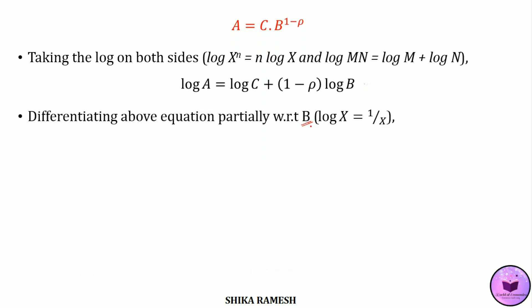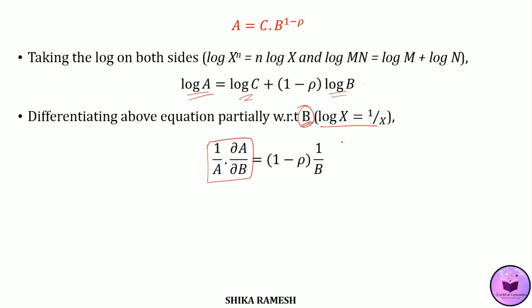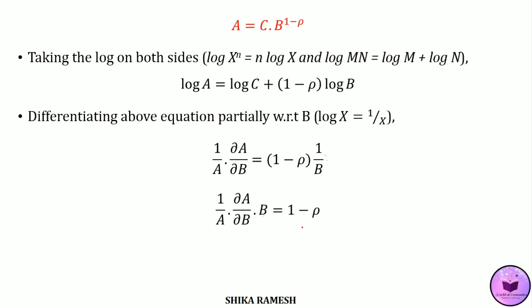Differentiating partially with respect to b, we get 1 by a times del a by del b equals 1 minus rho times 1 by b. Since the derivative of log x is 1 by x, differentiating log a gives 1 by a times del a by del b; log c gives 0; and log b gives 1 by b. Multiplying both sides by b gives 1 by a times del a by del b times b, which equals 1 minus rho. This can be rewritten as b by a times del a by del b equals 1 minus rho.